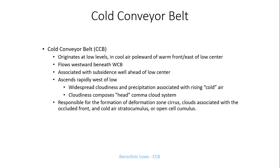On a weather satellite image of a classic mid-latitude cyclone, you'd notice specific distinctive features. For example, a dry tongue — visible in water vapor imagery as a darker ribbon of air — can get wrapped into very intense mid-latitude cyclones, especially during occlusion. Or you might see a comma-head, where the cloud image on satellite looks like a comma. The cold conveyor belt is responsible for the formation of deformation zone cirrus, generally to the northwest of the surface low, along with clouds associated with the occluded front, and cold air stratocumulus or open cell cumulus seen behind the cold front.